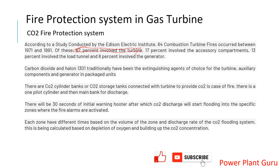In older machines, halons were also used, but now carbon dioxide is predominantly used. CO2 has an advantage over halon: when halon is released, there is a surface reaction that causes rusting and long-term corrosion issues post-discharge. Due to these issues, carbon dioxide gradually gained popularity, and now CO2 flooding systems are the standard fire extinguishing system in most places.